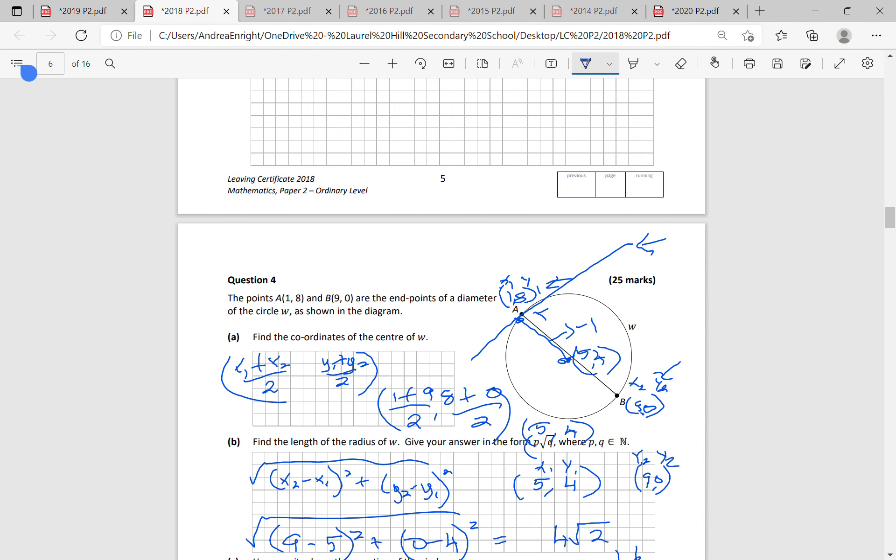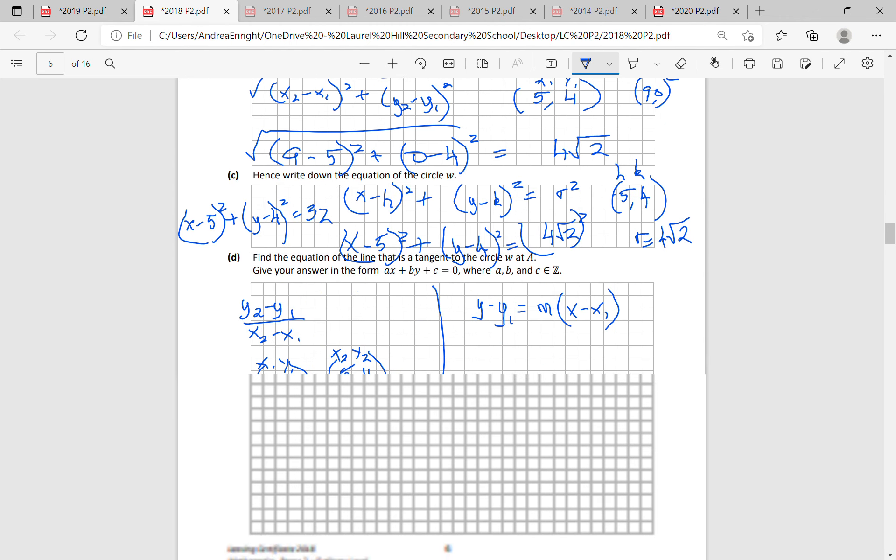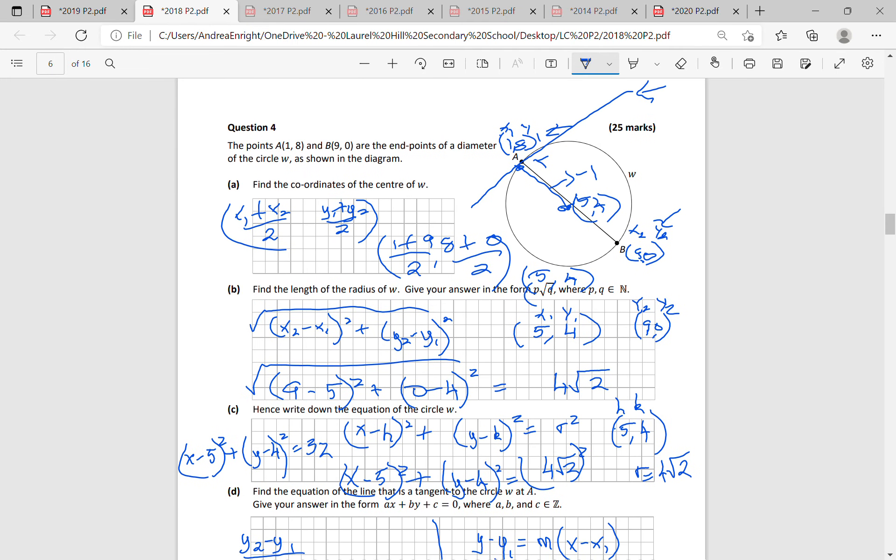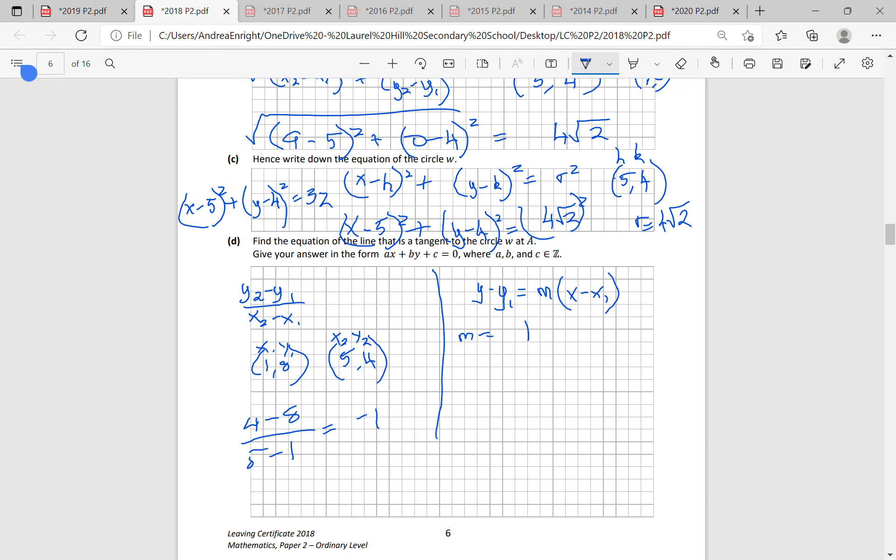That's not the line we're looking for. The line we're looking for is perpendicular. So the line we're looking for has the slope of, turn it upside down, it's still 1, change the sign, it's now plus 1. And it goes through the point 1, 8. So we call this x1, y1. So then you fill in, it's y minus 8 equals 1 into x minus 1.